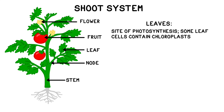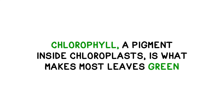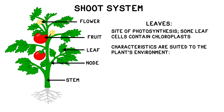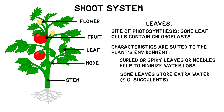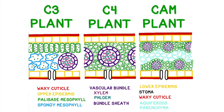Leaves are the major site of photosynthesis. Their cells contain chloroplasts, which harness energy from sunlight to produce sugars. Chlorophyll, the pigment inside the chloroplasts of the leaves, is what makes most leaves green. Leaves come in many shapes and sizes, each specifically suited to its environment — for instance, plants in hot, dry environments often have spiky leaves or needles to help reduce water loss. Some plants such as succulents store water in their leaf tissues. If you'd like a more detailed view of the interior structure of leaves, I've left a link in the video description.